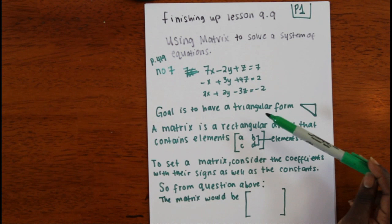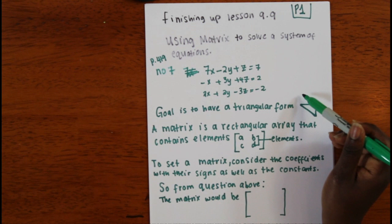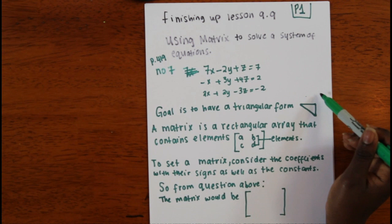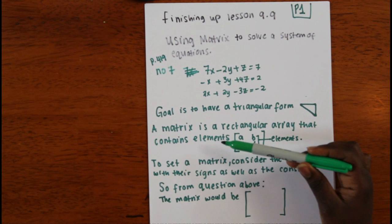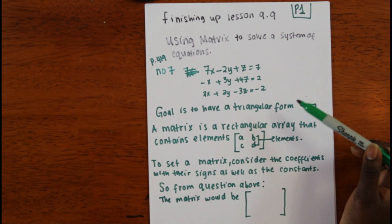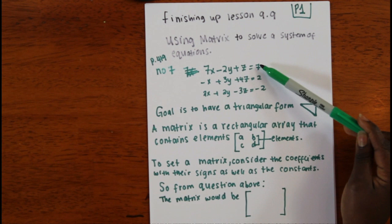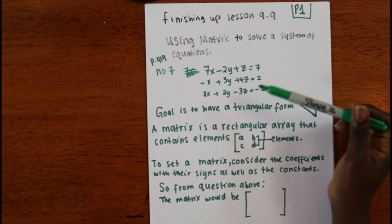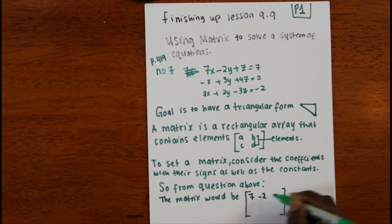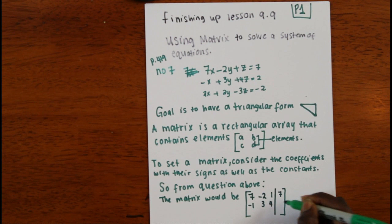Recall from Thursday — the goal is to translate the equations to where you have the triangular form, where at the end you have Z equals a constant, and then you'd be able to go back and substitute. A matrix is a rectangular array that contains elements. The brackets are used to set up the matrix. When setting up your matrix, you consider the coefficients from your problem — seven, negative two, one — and also the constants for the answers. You can draw a line to differentiate the constants from the coefficients; you don't have to, but it's a good idea when you're starting off.